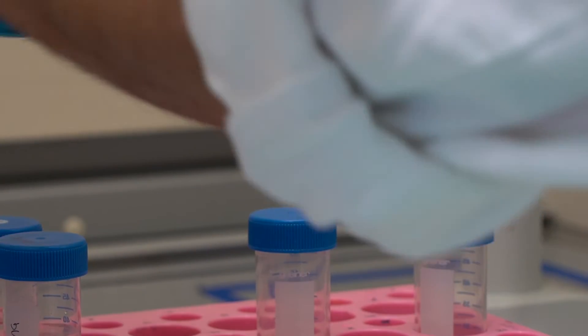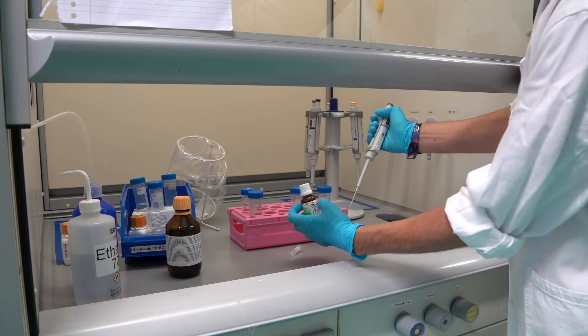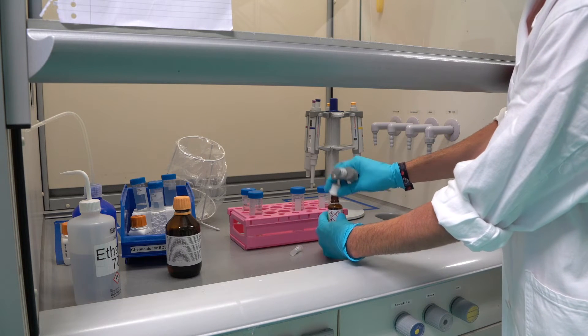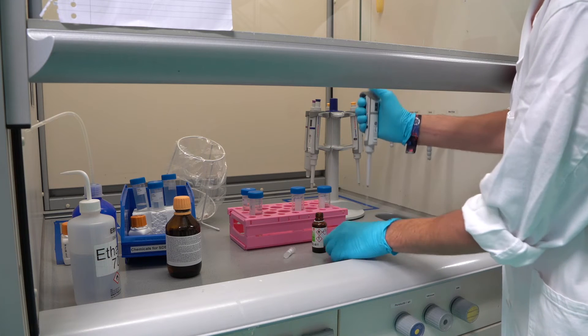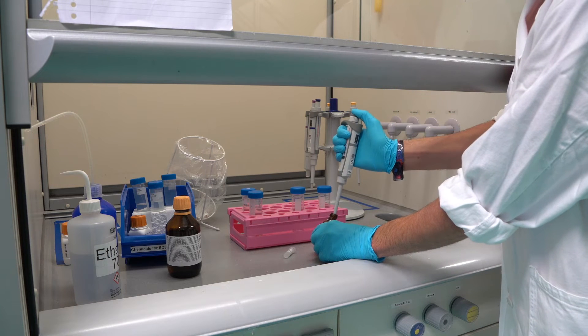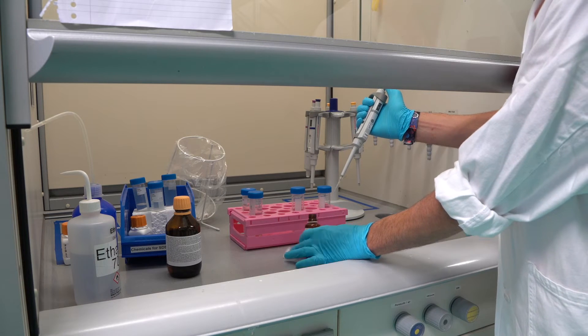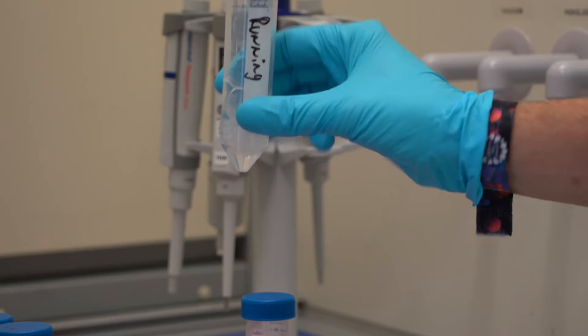Prepare the running gel in a fume hood. Calculate the volumes needed for making a gel. Pipette the correct amounts together in a falcon tube. Pipette the Temed and the APS into the solution last, as this ensures that the polymerization of the gel will occur. Mix the solution by inverting two times.